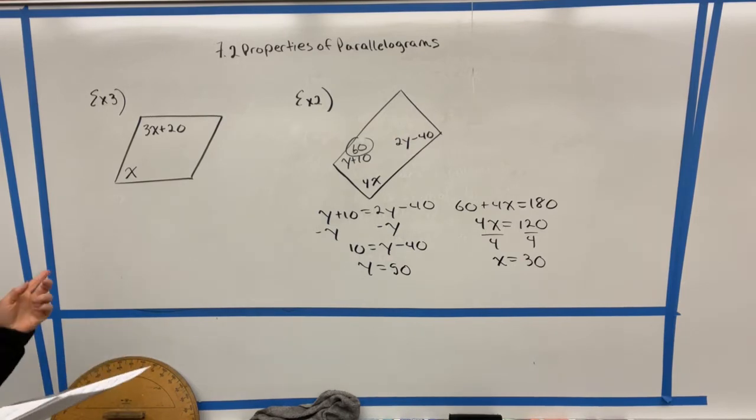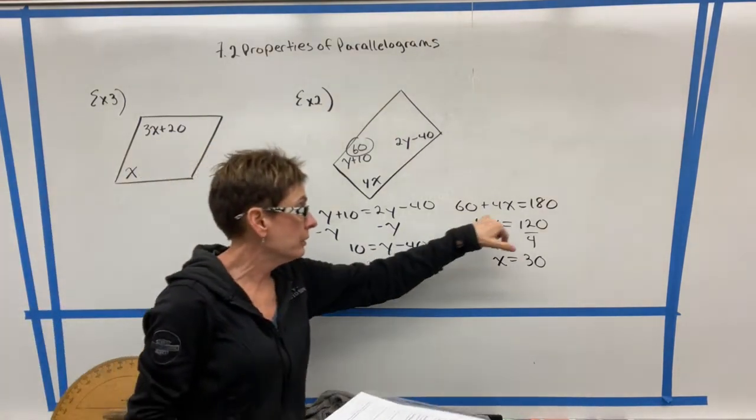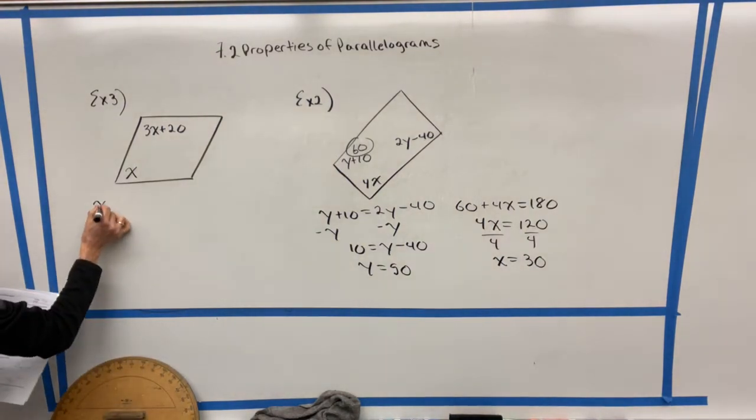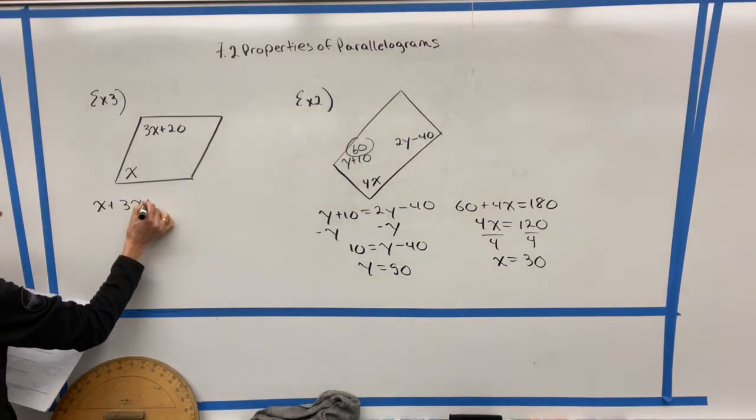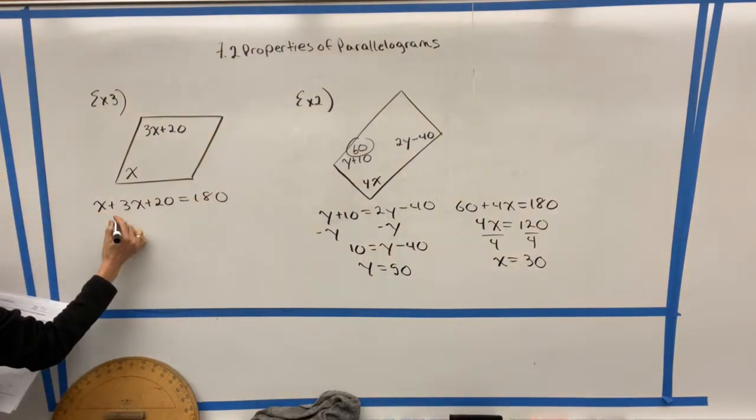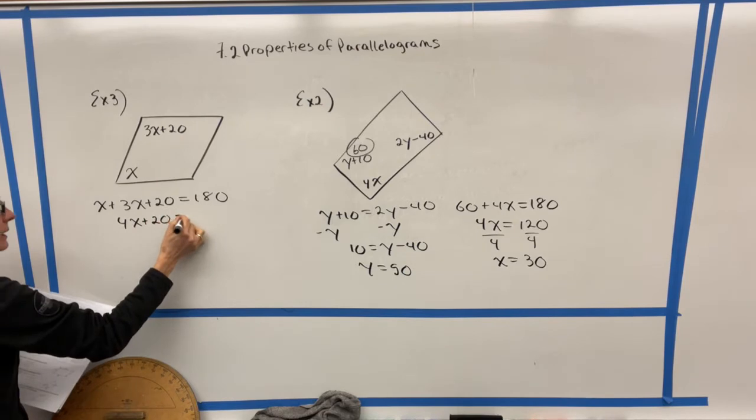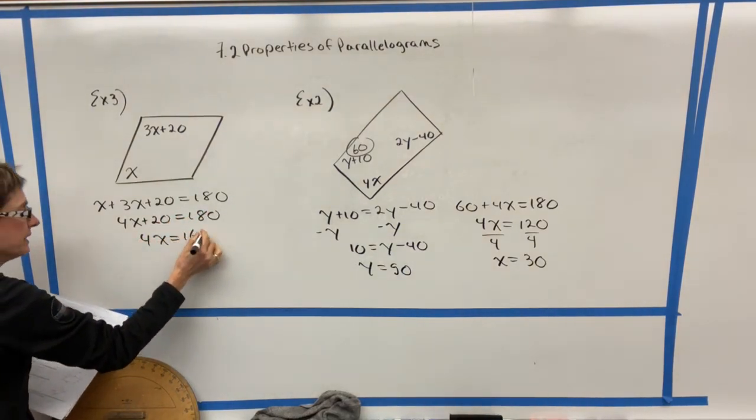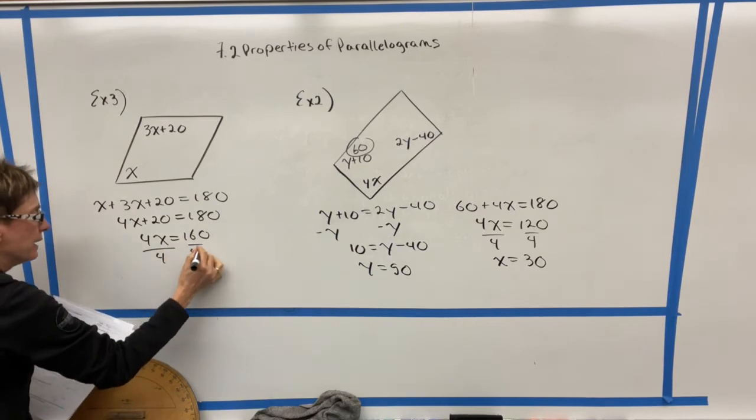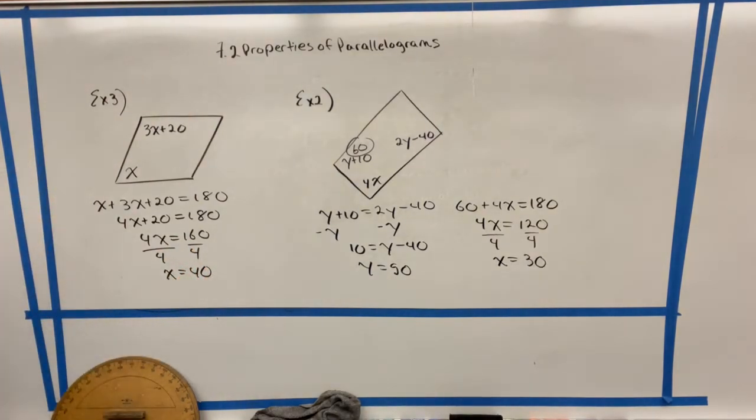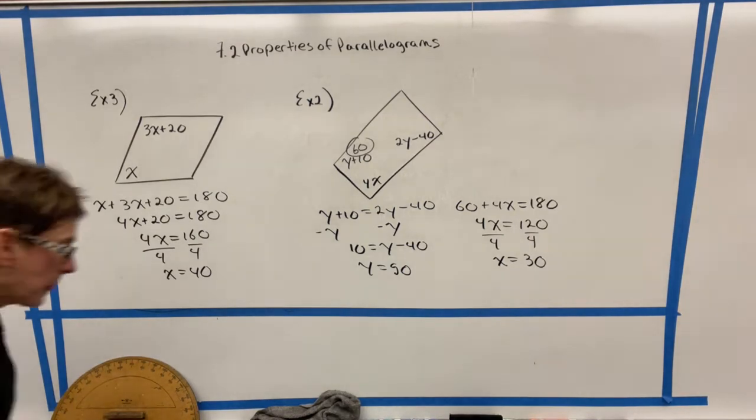Now I'm going to go back to what we talked about a minute ago, and that is that the consecutive interiors have to add up to 180. So X plus 3X would be 4X, and then I would subtract 20, 4X equals 160, and divide by 4, and X would be 40. Awesome.